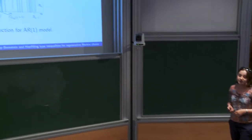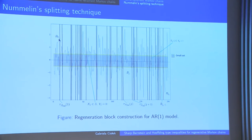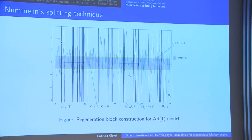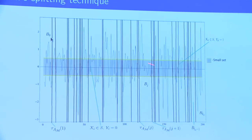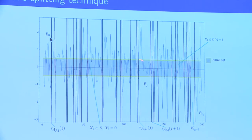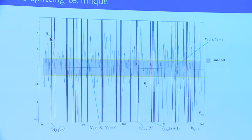The Nummelin splitting technique is quite a theoretical construction, so let's look at an illustration. Here we observe the trajectory of an autoregressive model of order 1. Whenever we are in the gray area — the chosen small set — no regeneration happens outside it. When X_i is in S and Y_i equals 0, with probability 1 minus delta, we also observe no regeneration. But whenever X is in small set S and Y_K equals 1, we cut our data and create a new block. This gives the block decomposition of the AR(1) process, which is a Harris recurrent Markov chain.